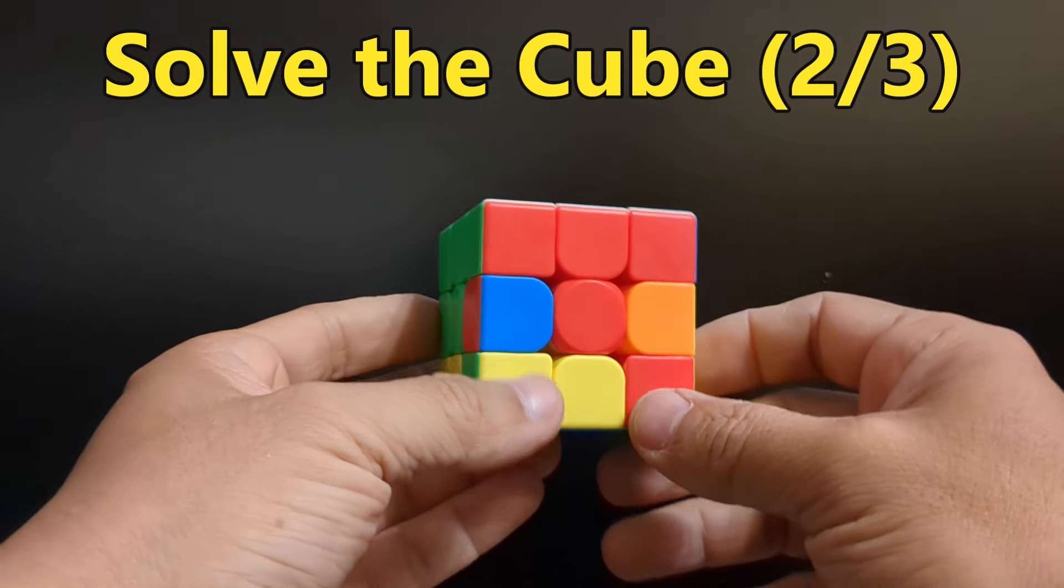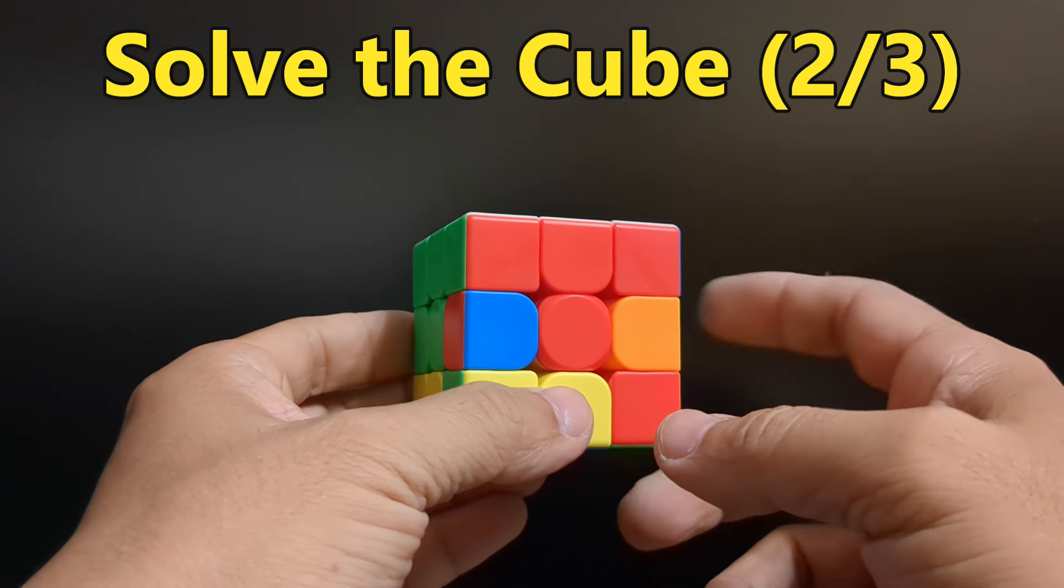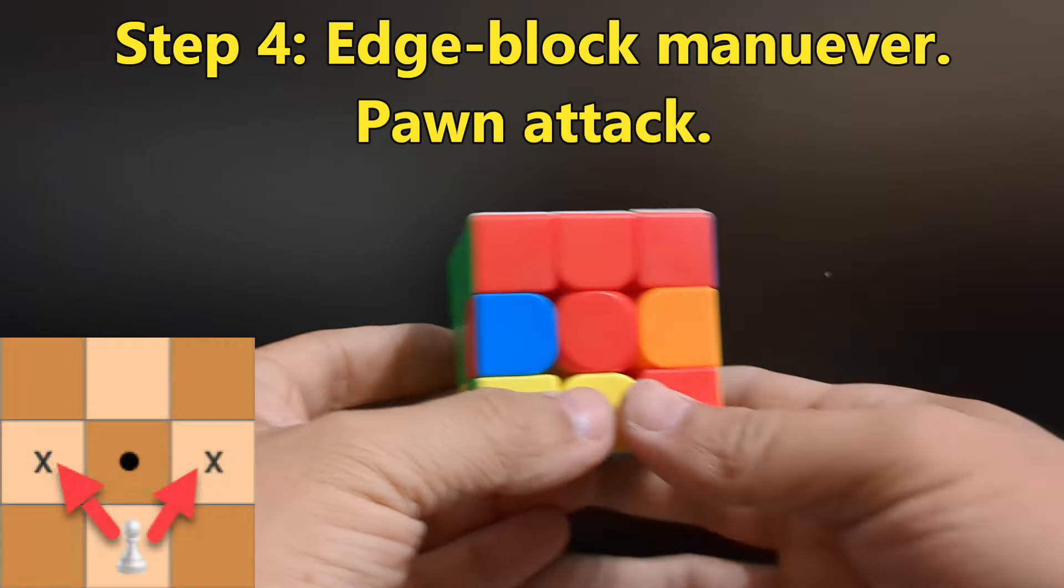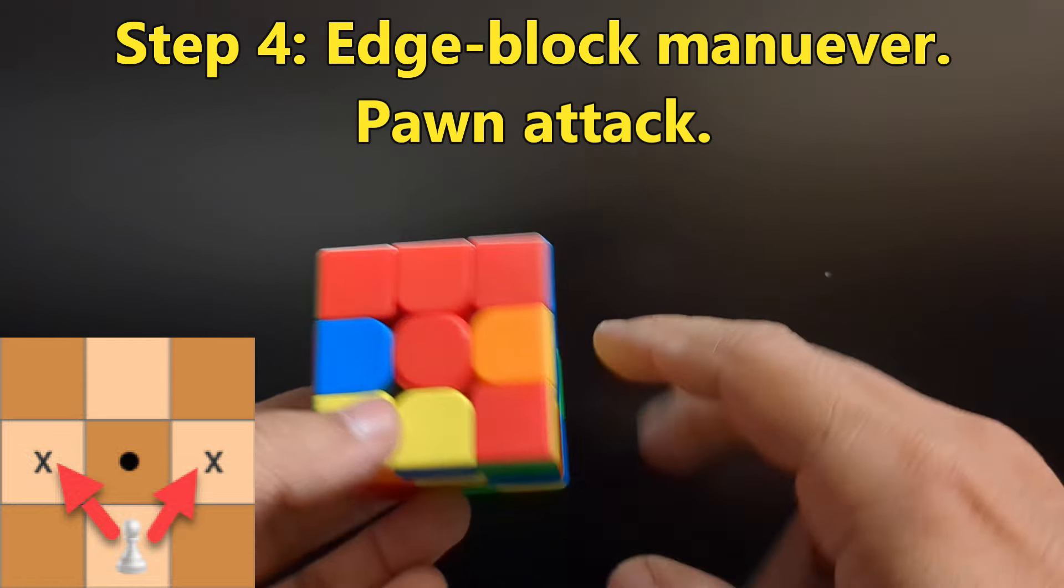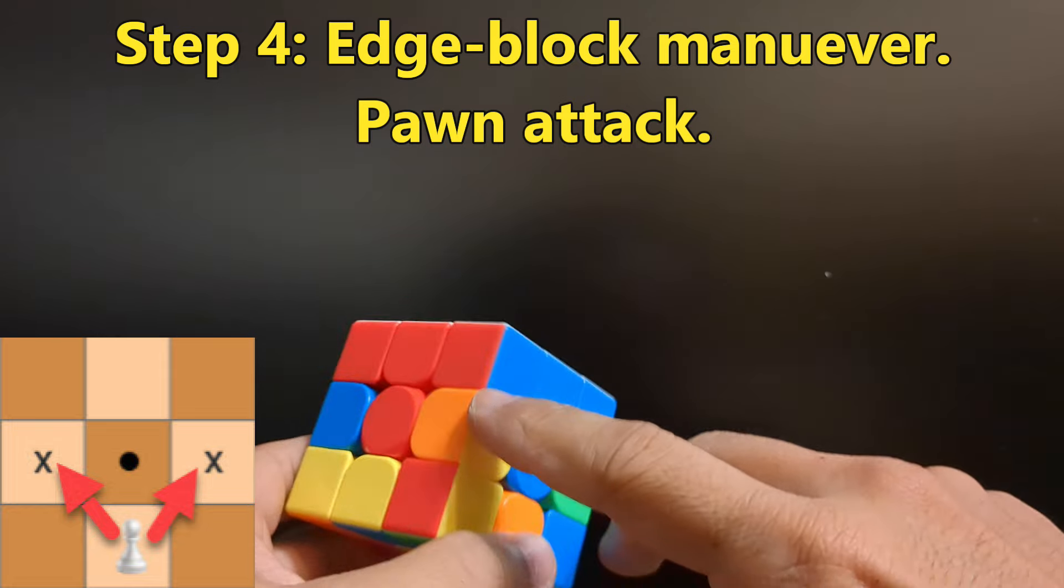Now that you have your first tier done, we're on step number four. Step four is to move these pieces to match the side cells.